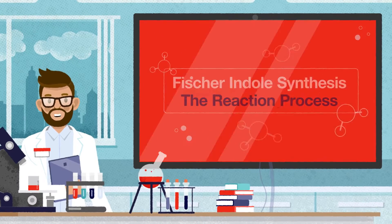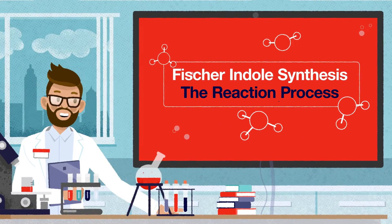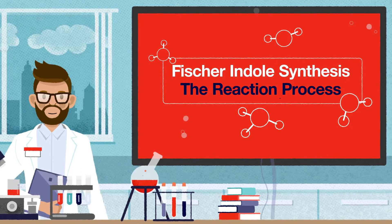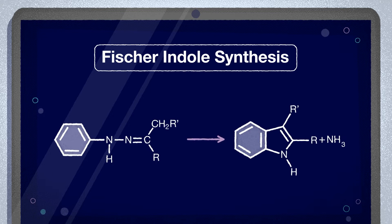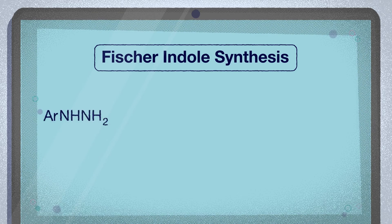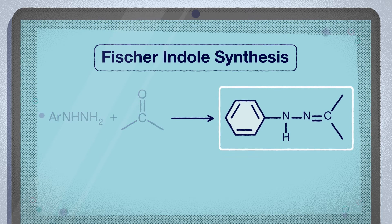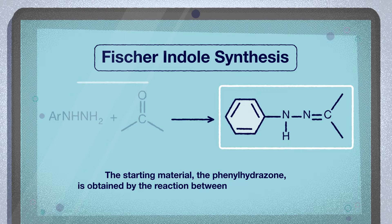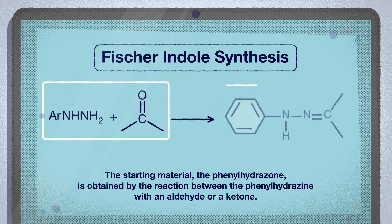So, let's take a look at the reaction process. Here is the Fischer-Indole Reaction. As a pre-reaction, the starting material — the phenylhydrazone — is obtained by the reaction between the phenylhydrazine with an aldehyde or a ketone.